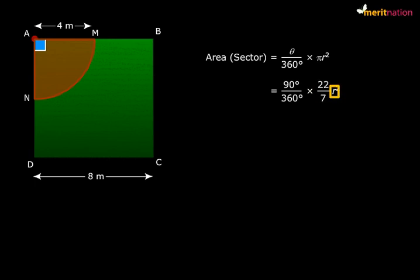What is the radius? That is nothing but the length of the rope, 4 meters. So this is the expression that you have. You simplify this and you will get your answer as 12.6 square meters. So the area of the grass field that the horse can graze is 12.6 square meters.